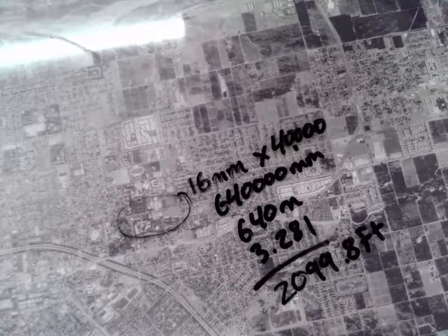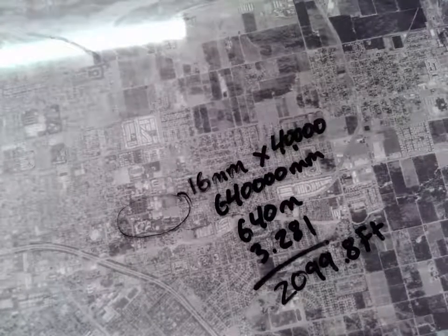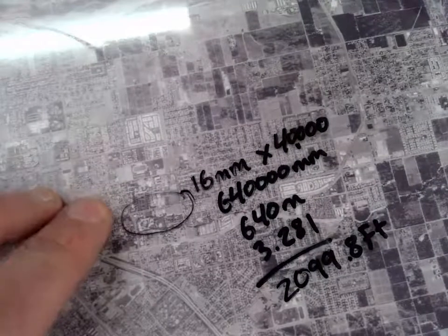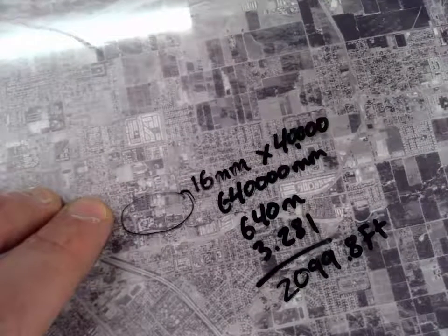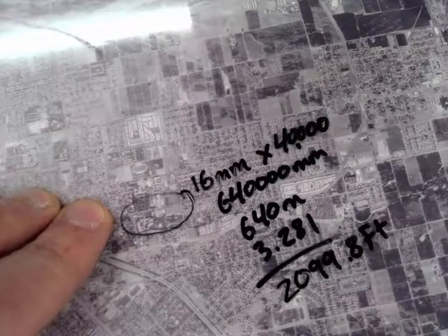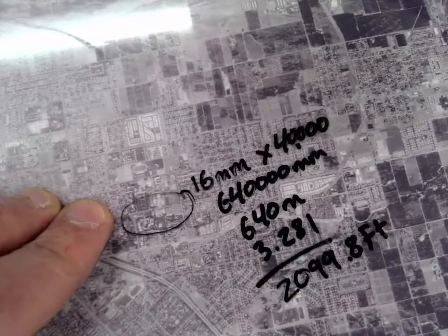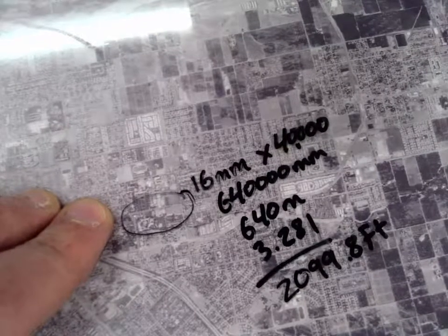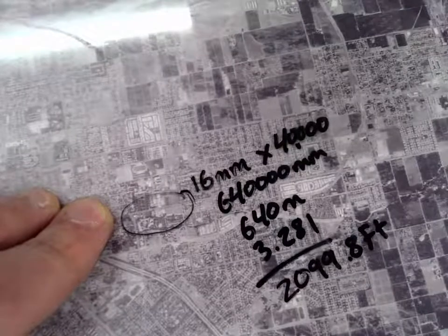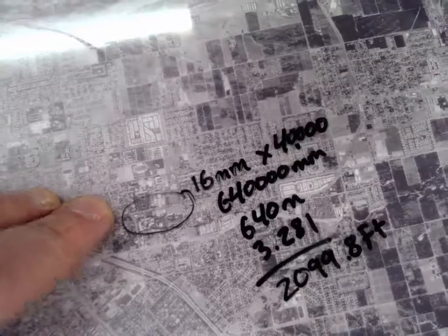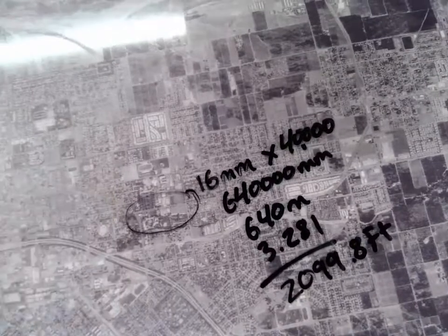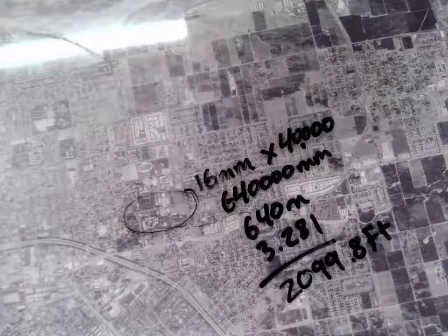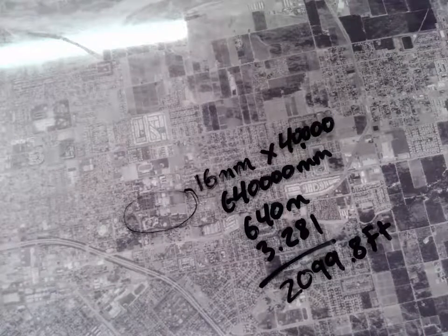So now we know the length of that road just by doing some measurements. Back in the 90s when this was taken, pre-GPS, this would have been a much easier way to do that than to actually get out and do some real physical measurements on the ground.